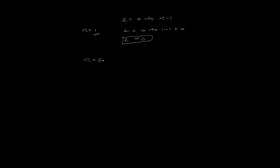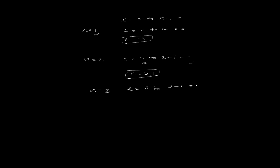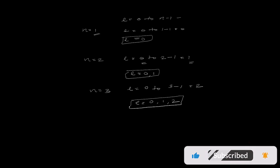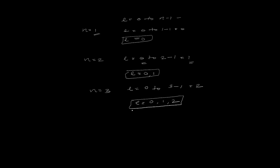If the value of N is equal to 2, then according to the formula L = 0 to N-1, the value ranges from 0 to 2-1, which equals 1. So L has values 0 and 1. Similarly, for N equal to 3, the value of L ranges from 0 to 3-1, which gives 2. So L takes values 0, 1, and 2. In this way we can calculate the azimuthal quantum number from the principal quantum number.